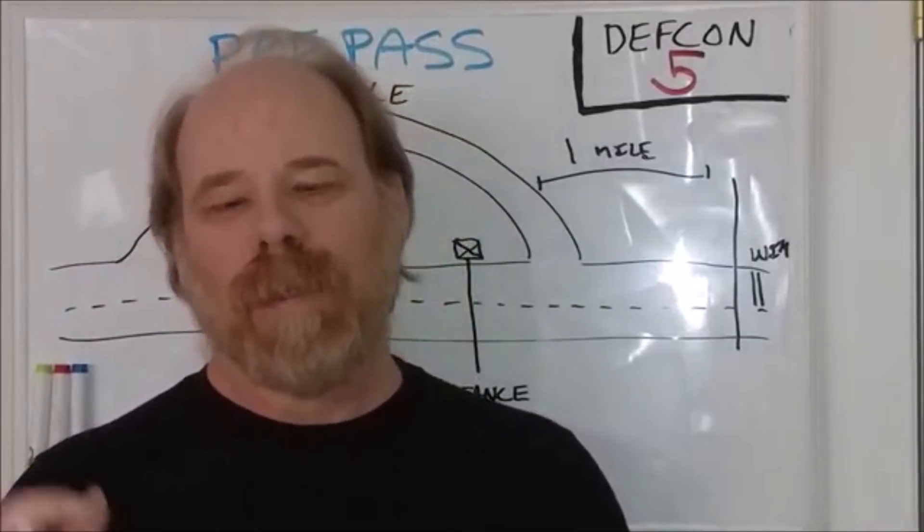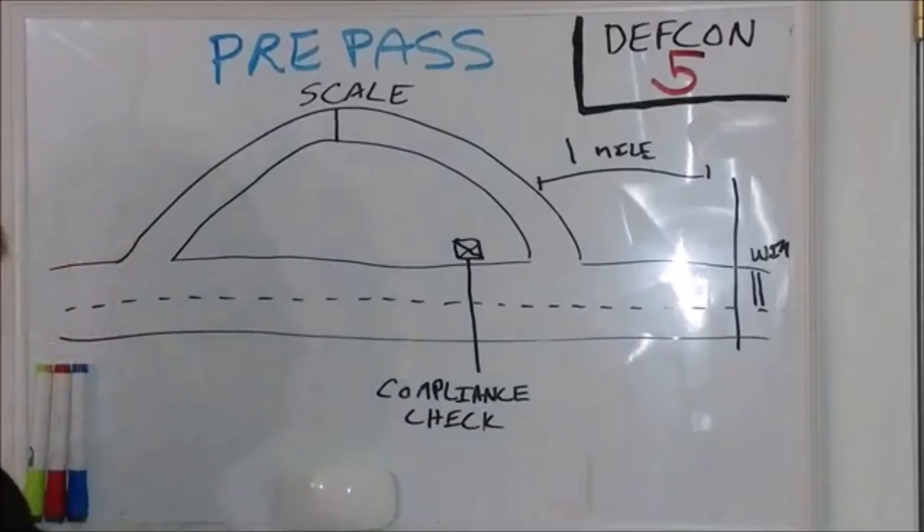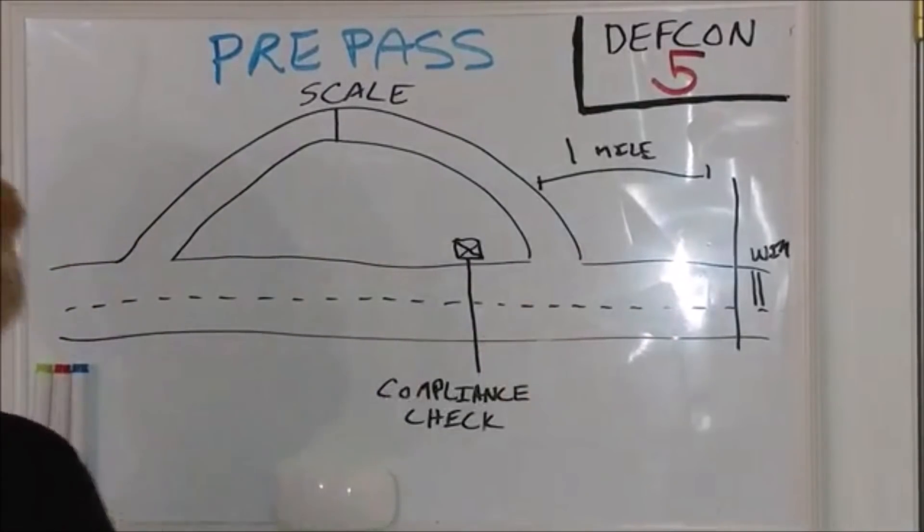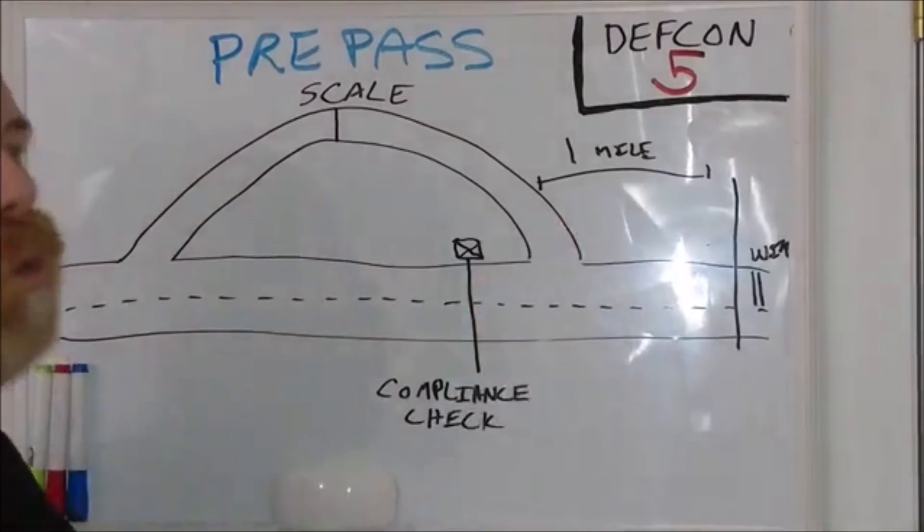So PrePass, many of you have this PrePass on the windshield of your truck. That's called a transponder. The thing that's over the road is an advanced vehicle identification reader, an AVI, and it's about one mile away from the scale house.